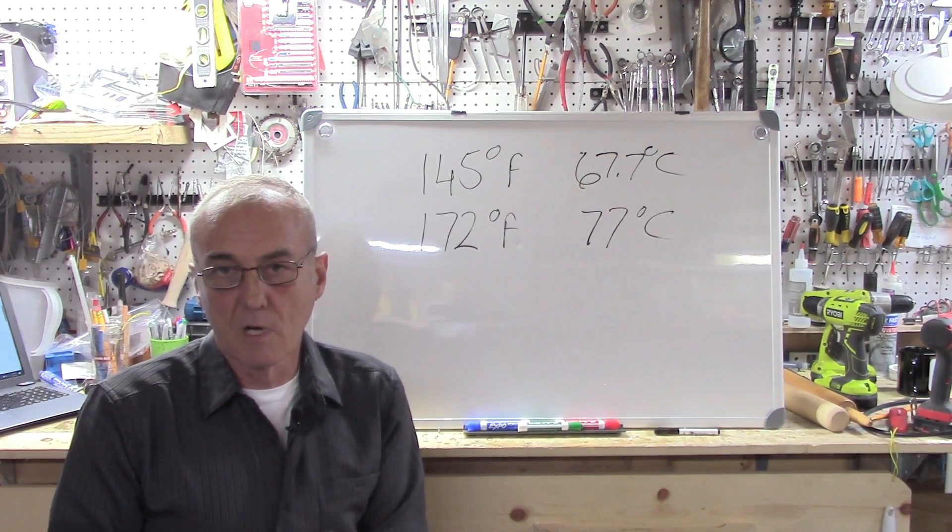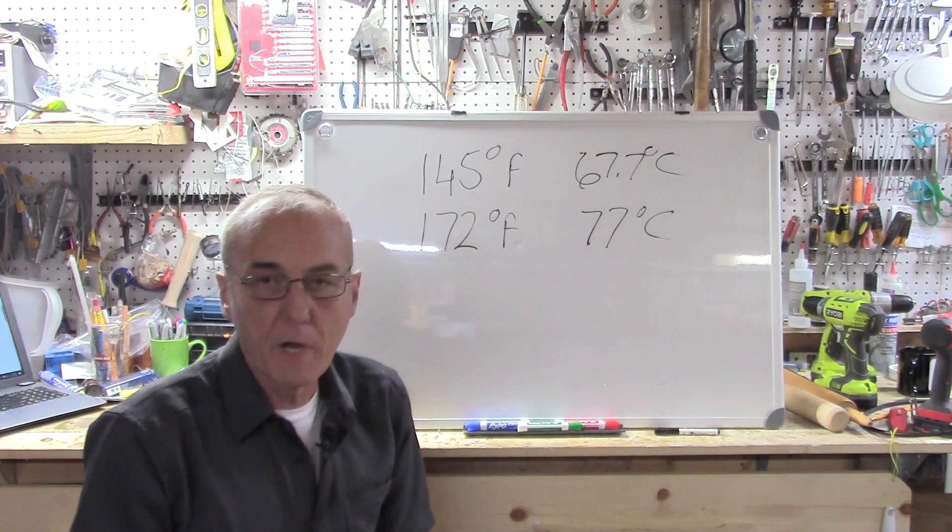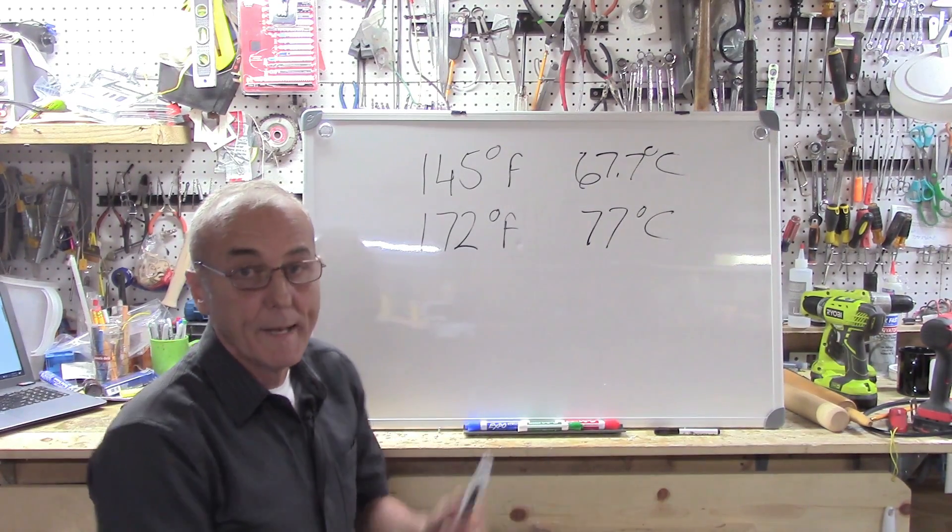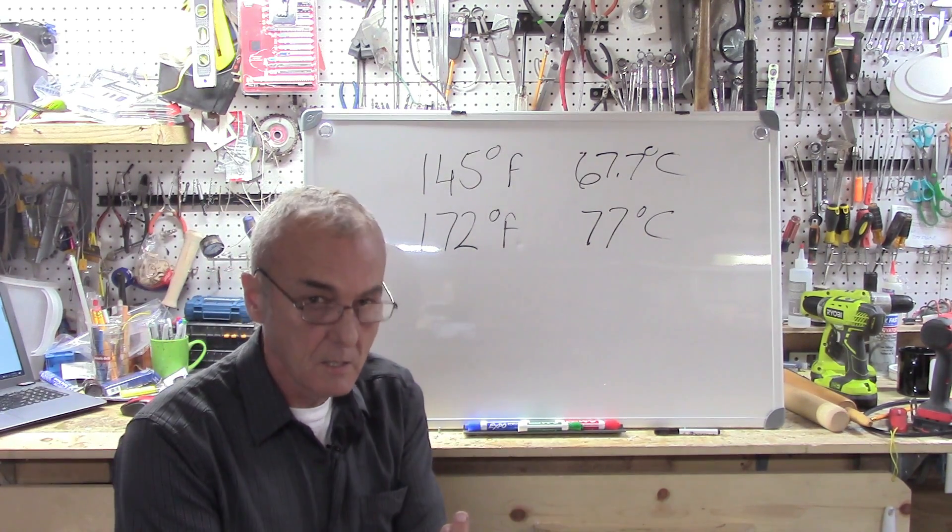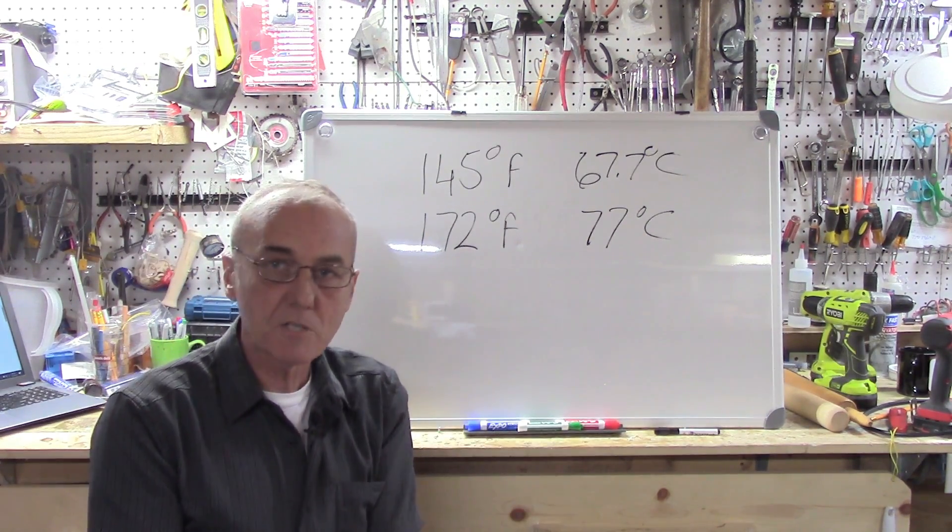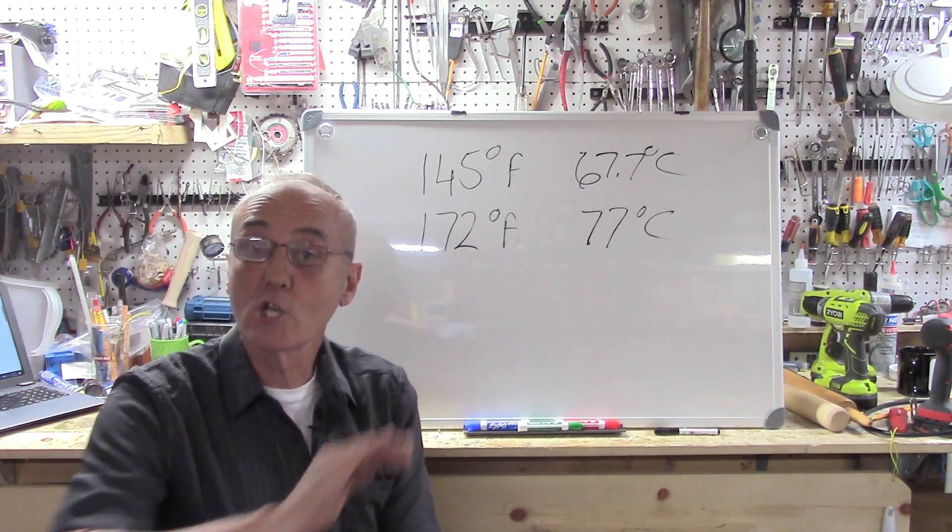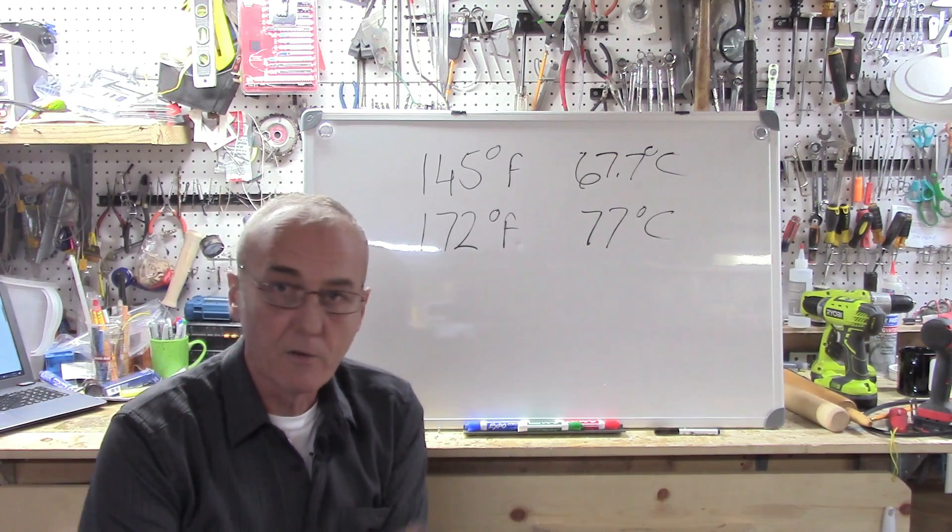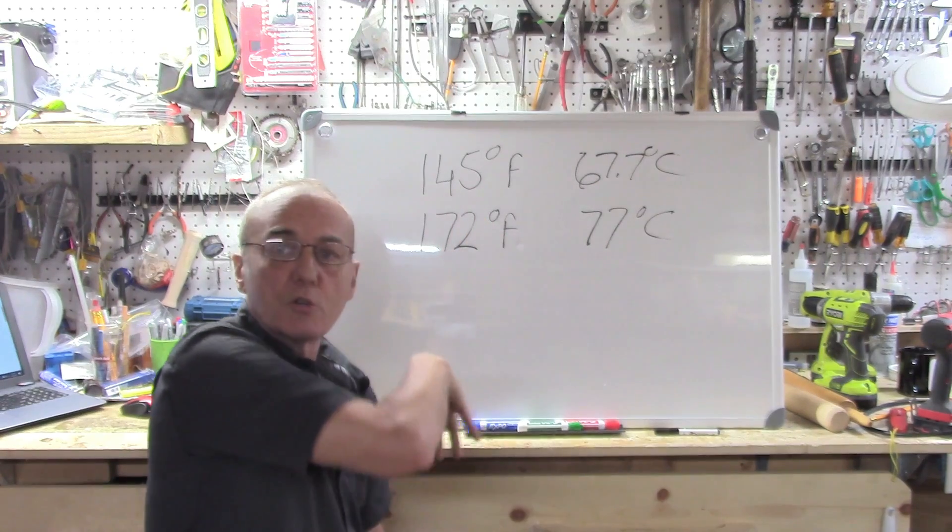So here's what we know for sure: we know for sure that in the beginning of a run there's no way that you can get to 172 while you're heating up your still and not go through 145. So what's that tell us? It tells us that methanol must come off first. Once it's gone, it's gone.